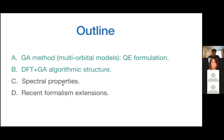I will also mention how one can extract spectral properties such as mass renormalization effects. Finally, in the last part I will talk about the recent ghost GA extension, which can cure the limitations we've identified while maintaining a computational advantage compared to the MFT. It's based on exactly the same formalism we are going to learn.